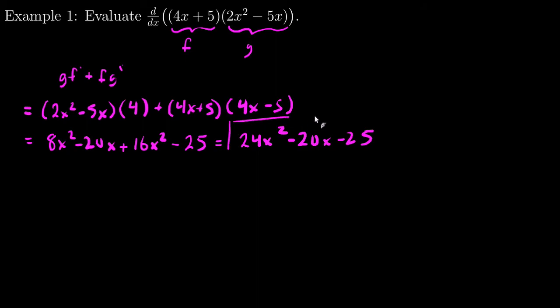And, I'll get 24x^2 - 20x - 25. So, that will be the solution. That will be the answer. But, there's a different way, a better way, I think, to do this. Just avoiding product rule. I show it this way because it's a product rule video. But, if I had a choice, I would just do it this way.